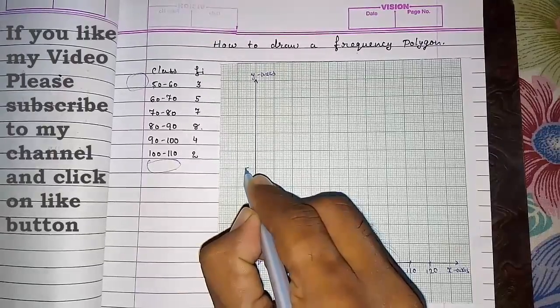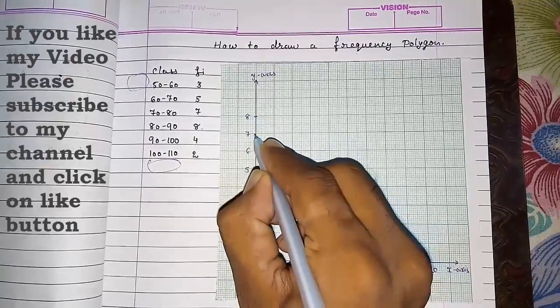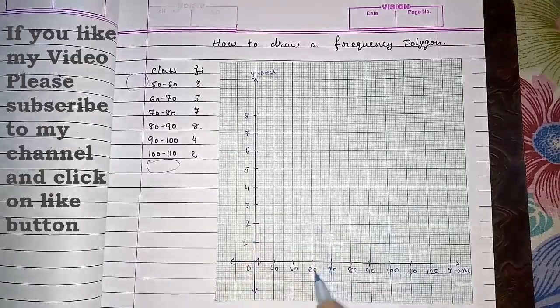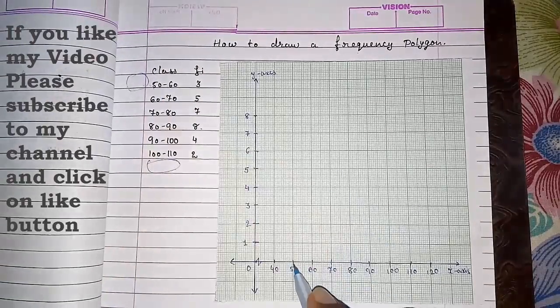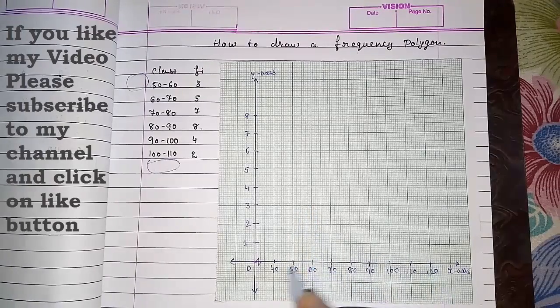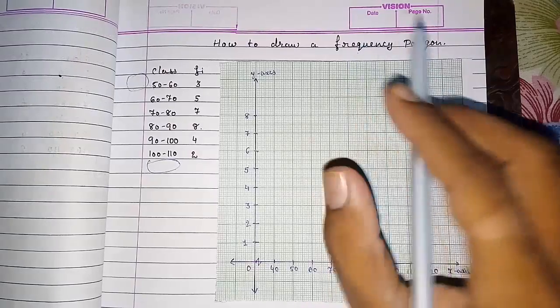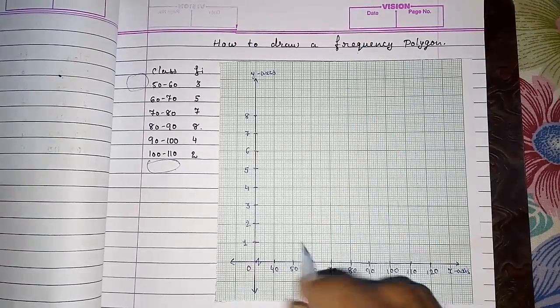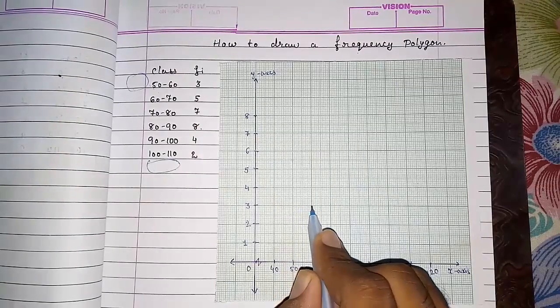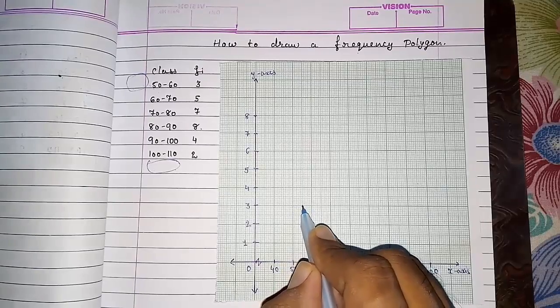Now for histogram we were drawing bars from 50 to 60, but here we don't have to draw bars. This is frequency polygon, so it is made up of only line segments. Just we have to put a point on number 3. 50 to 60, so this is our line, but we don't have to draw a bar for this 50-60. Just we have to put a point on the midpoint.